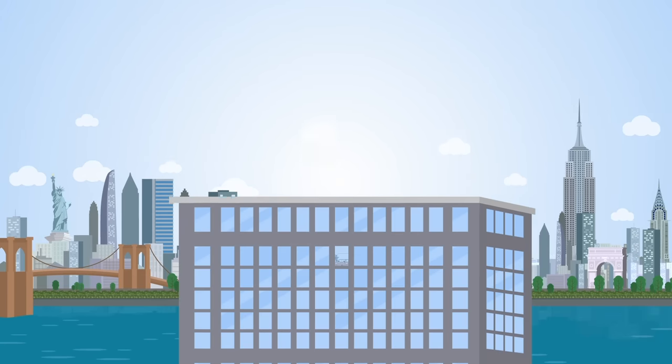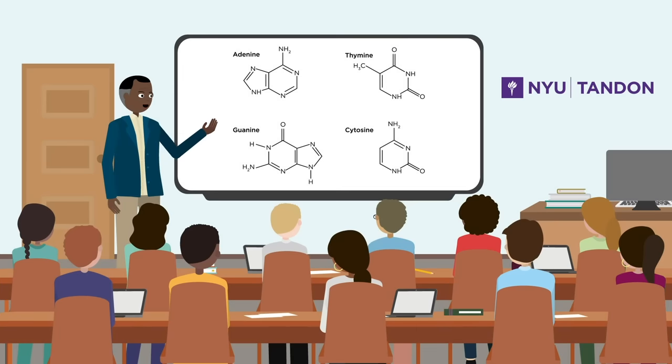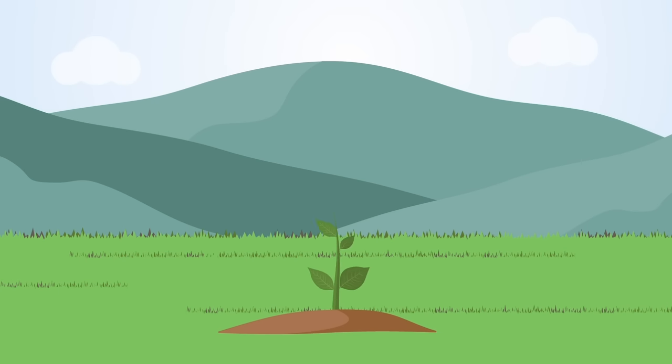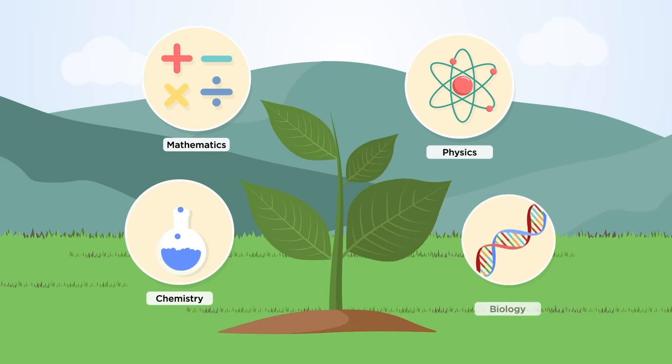At NYU Tandon, our Biomolecular Science Bachelor of Science program is designed to teach students these intricate molecular relationships that make up life. The first two years of the program give students a solid foundation in math, physics, chemistry, and biology.